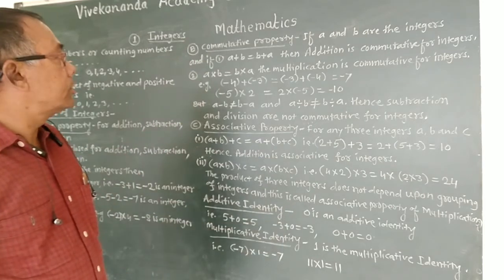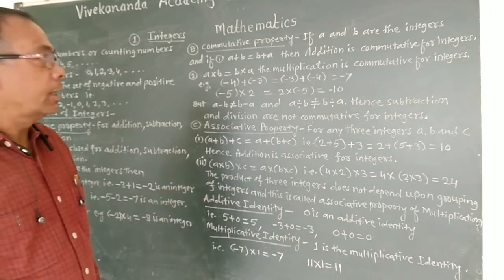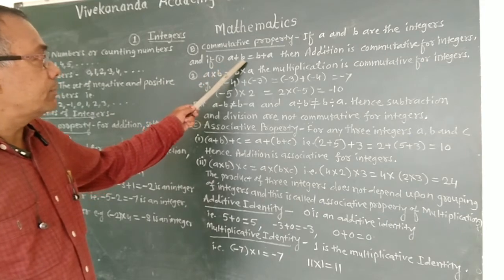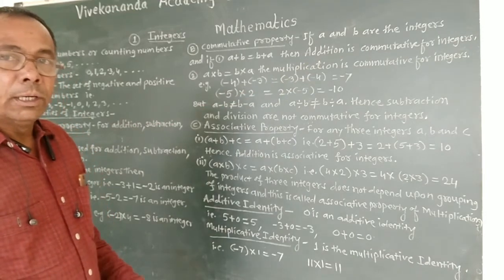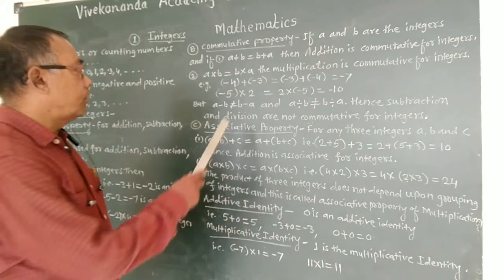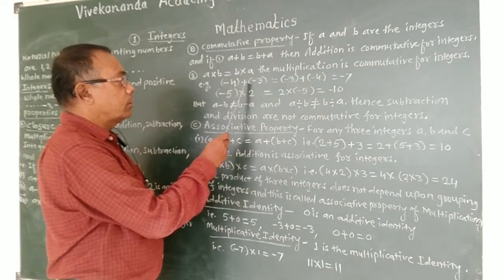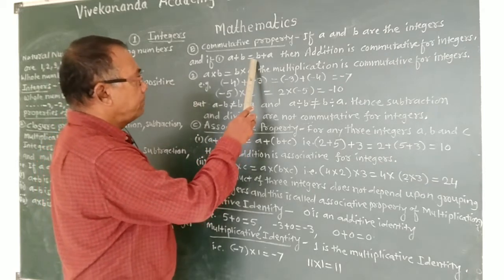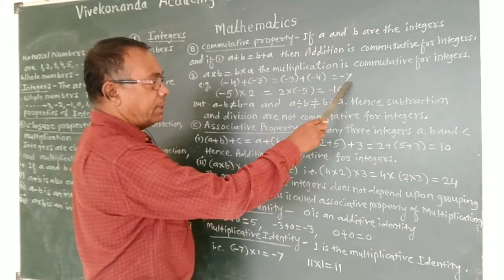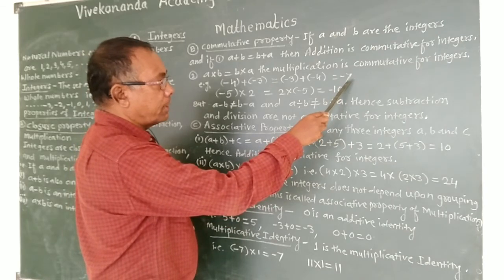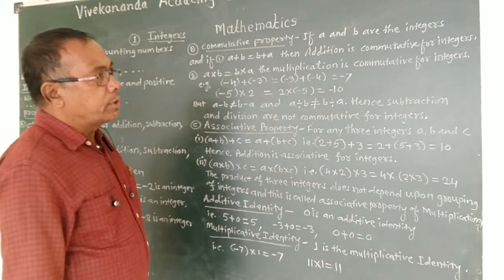Now the second property is the commutative property. If a and b are integers and a plus b is equal to b plus a, then addition is commutative for integers. For example, if a is minus 4 and b is minus 3, then minus 4 plus minus 3 equals minus 3 plus minus 4, and both equal minus 7. Therefore, addition is commutative for integers.